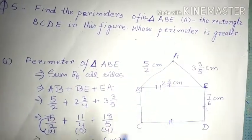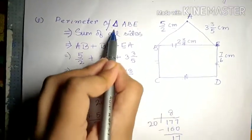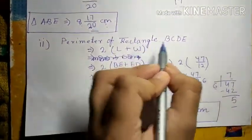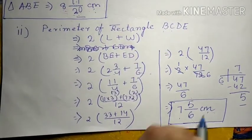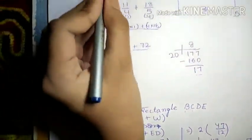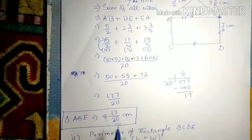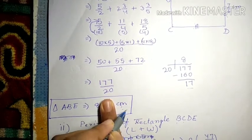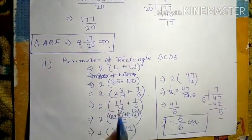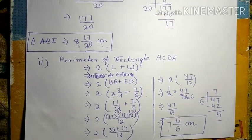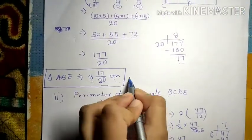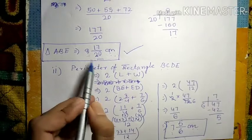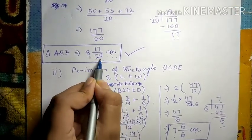The next part asks whose perimeter is greater. We found that the perimeter of triangle ABE is 8 17/20 cm and the perimeter of rectangle BCDE is 7⅚ cm. Looking at the whole number parts: triangle gives 8 and rectangle gives 7. Since 8 is greater, the perimeter of triangle ABE is greater.